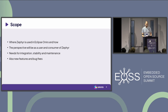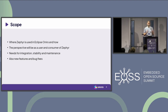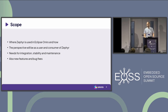Let's set the scope. The question is how we use Zephyr in Eclipse Neuro and what we do with it. This perspective is very much from a user perspective. Our needs are mostly for integration, for having a stable Zephyr base where we can base our own features, blueprints, or customer solutions on, and how we do maintenance on top of that. We also have needs for new features and bug fixes, so we need to pick newer versions of Zephyr from time to time.